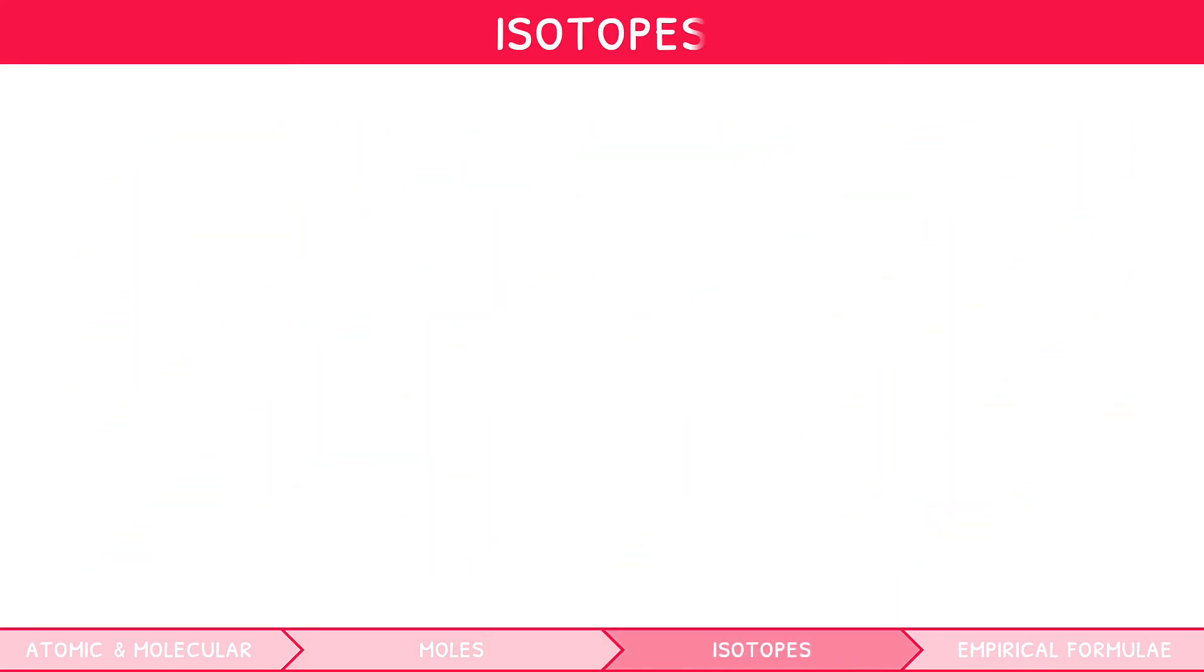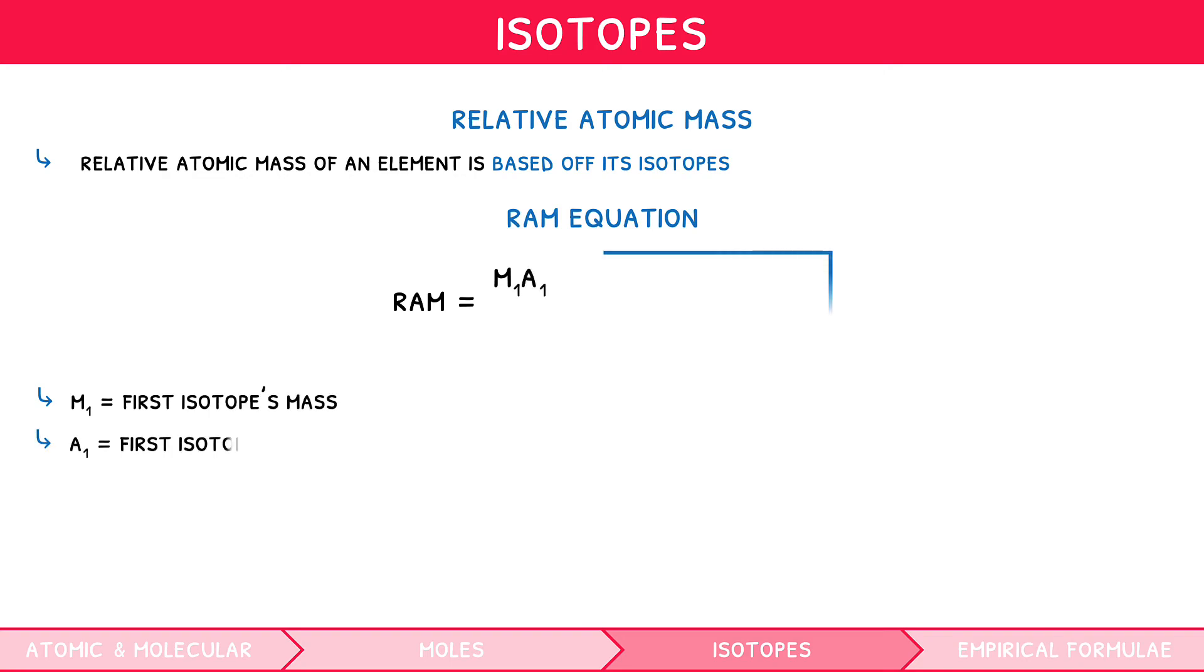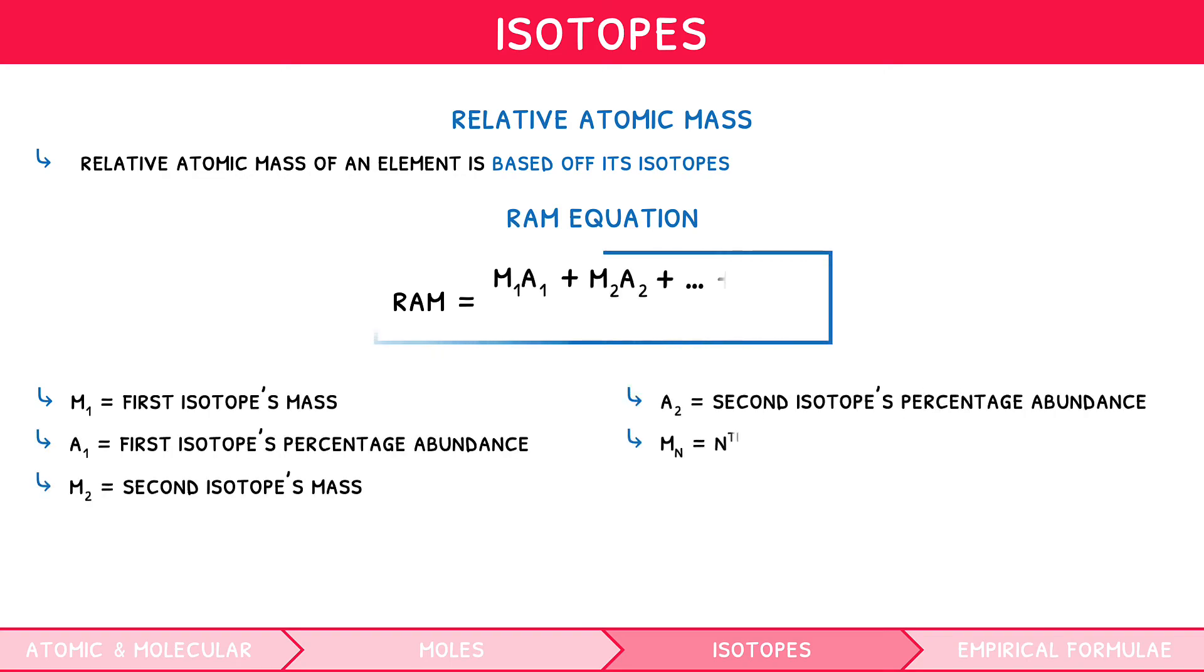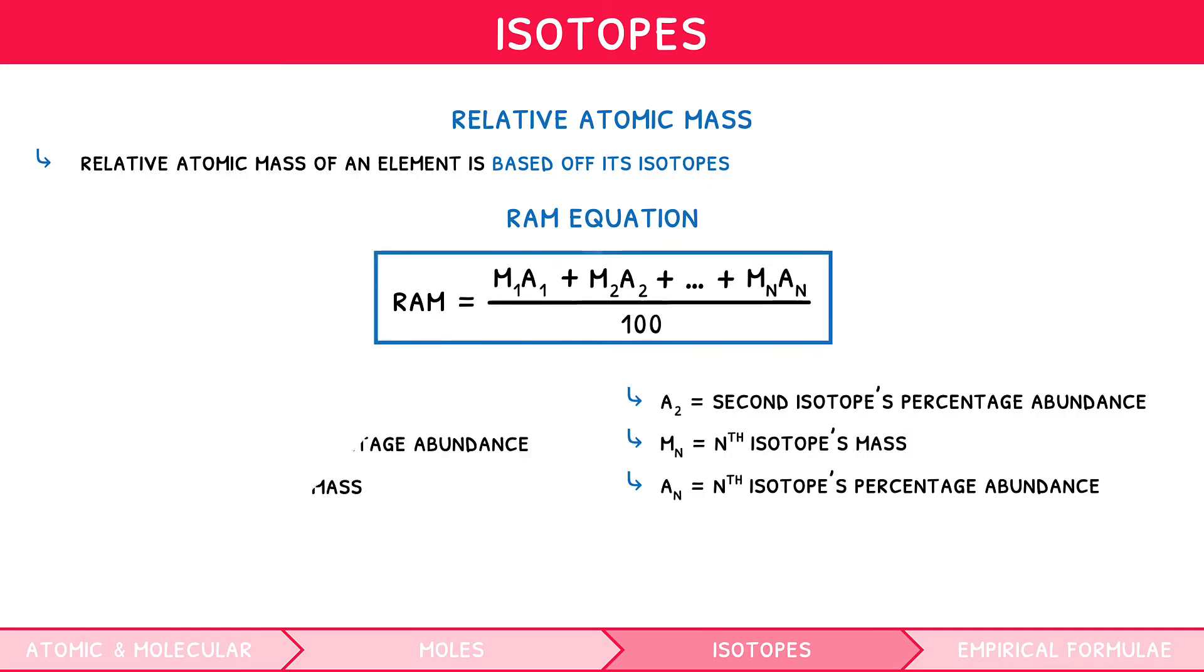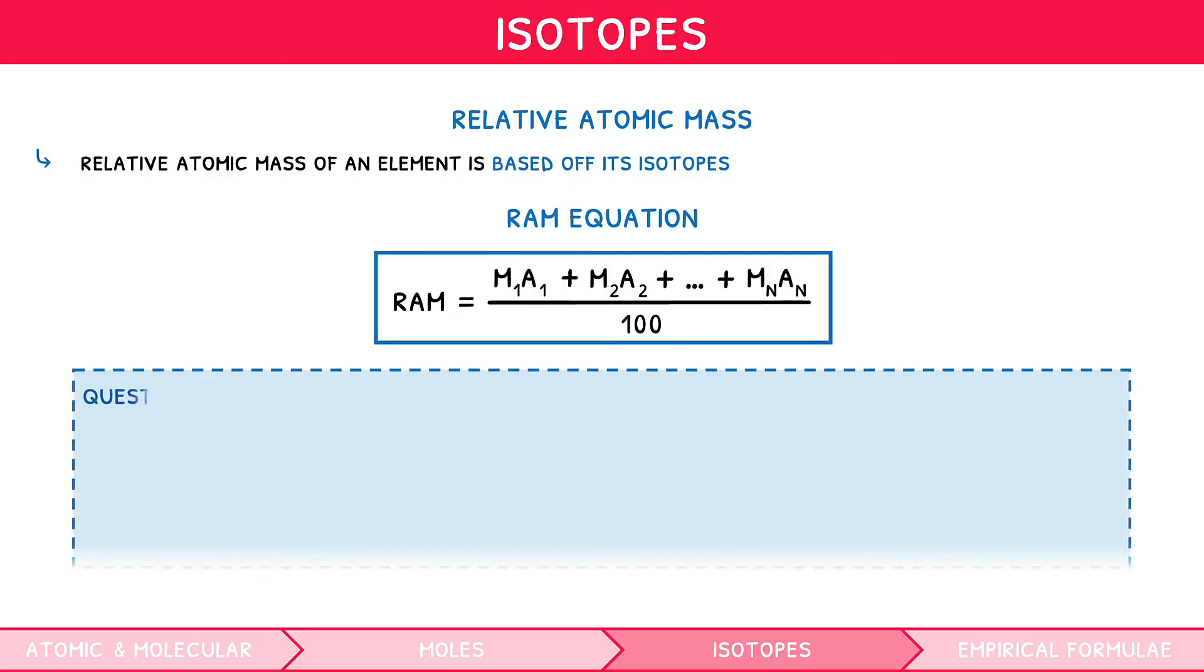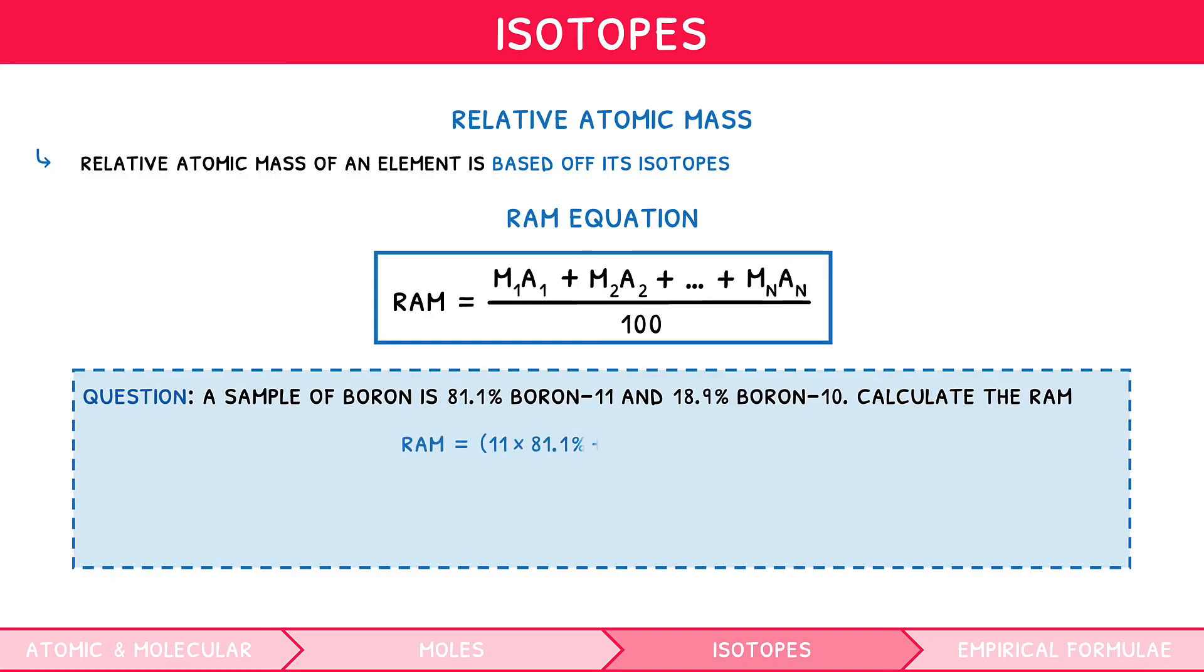But how does this all come together? Well, the IB will quite commonly ask you to calculate the relative atomic mass of an element based off of its isotopes. This is done using the following formula, where the relative atomic mass of the first isotope is multiplied by its percentage abundance, which is then summated with any remaining isotopes in the same way, before being divided by 100. So let's say we had a sample of boron, made up of 81.1% of the isotope boron-11, and 18.9% of the isotope boron-10. By using the formula, we can find the relative atomic mass for boron as 10.811.